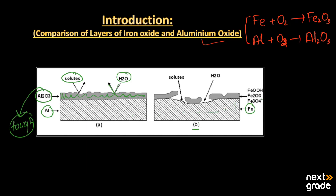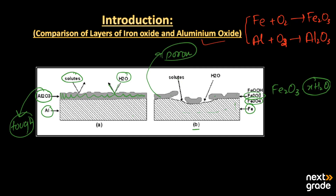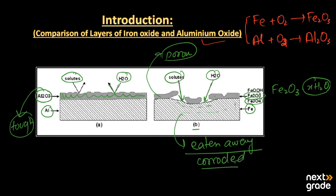On the other hand, in the big picture, this is the surface of iron. When it comes in contact with oxygen it makes a layer of iron oxide as Fe2O3·xH2O, because the number of water molecules that come in contact with the iron may vary. This layer is too porous, so solute and water may attack the underlying surface of the iron, and in this way the whole iron may be eaten away by the chemical reaction.